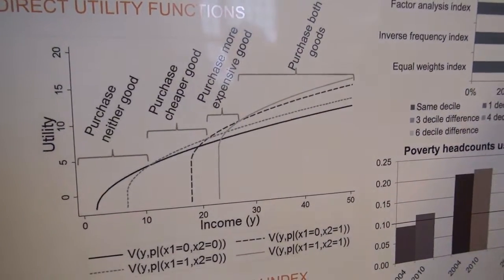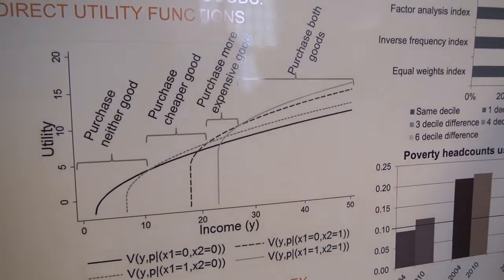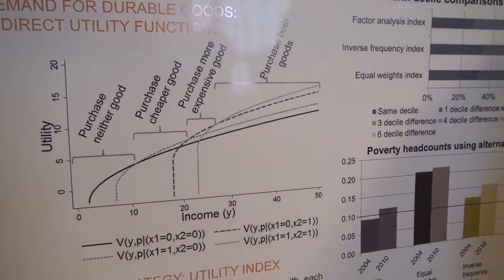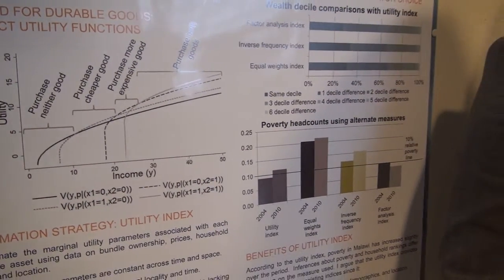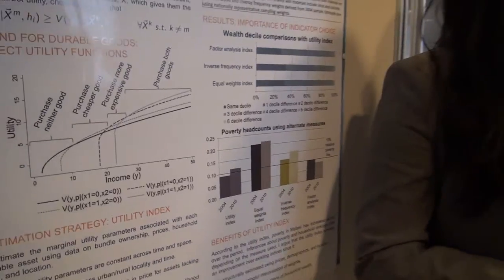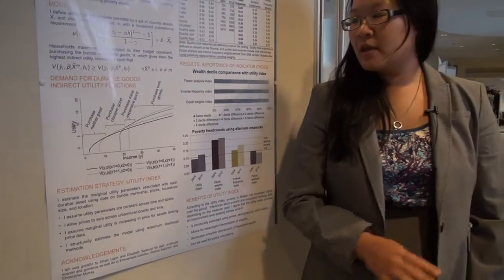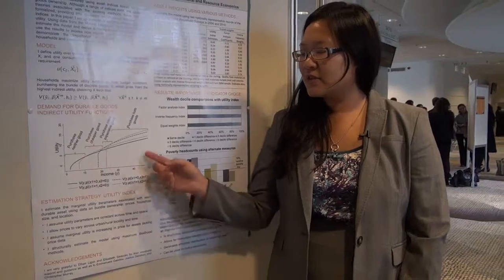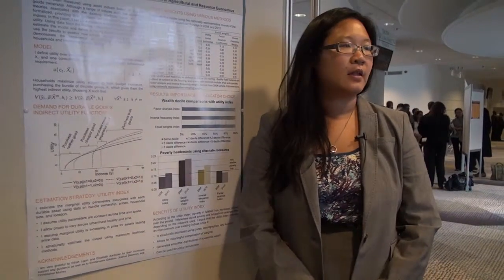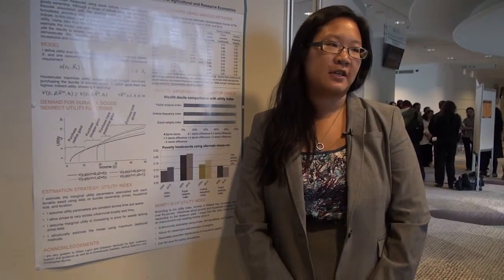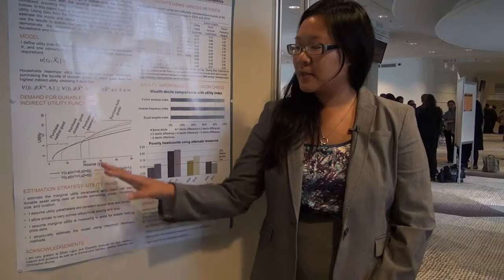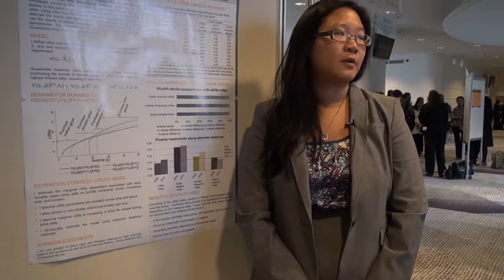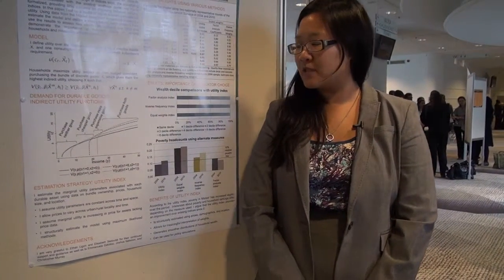In that case there are four potential bundles: neither the television nor the radio; the radio but not the television; the television but not the radio; and both. Each of these bundles has an indirect utility function associated with it, and households compare these functions to choose the optimal bundle.